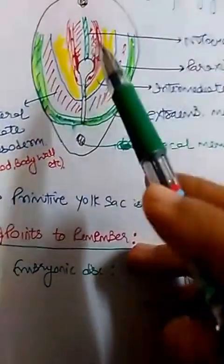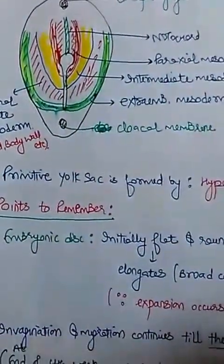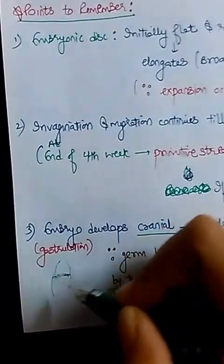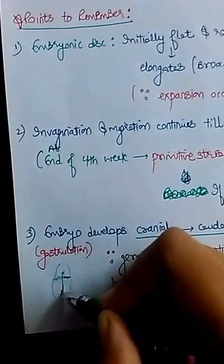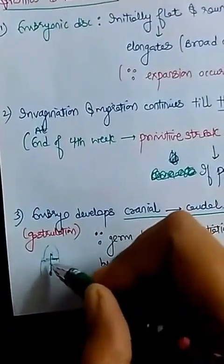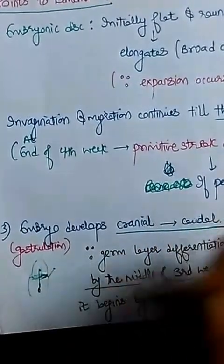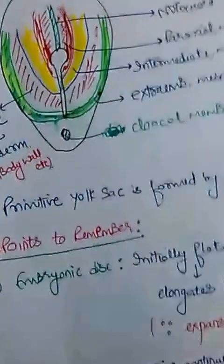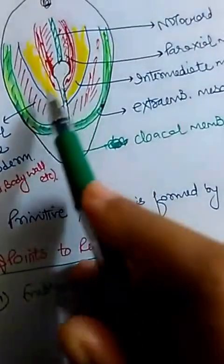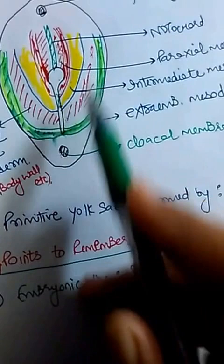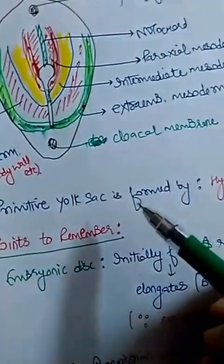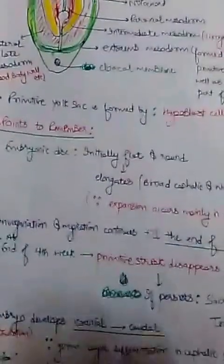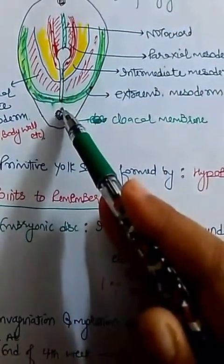Gastrulation proceeds craniocaudally. In the middle of the embryonic disc, the germ layers differentiate by the middle of the third week, whereas towards the caudal end they differentiate by the end of the fourth week. So the embryo is developing craniocaudally, and the primitive streak itself grows in a cranial to caudal manner.